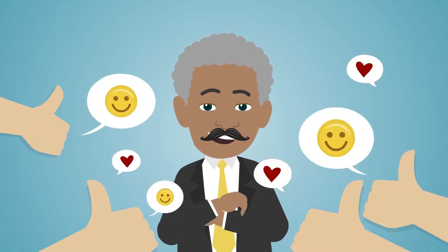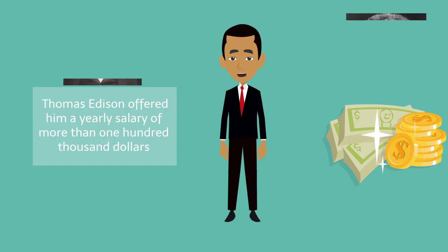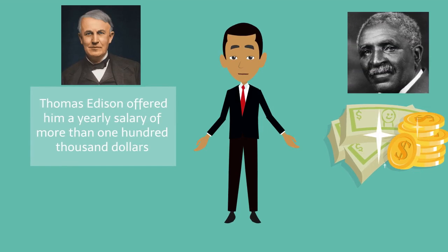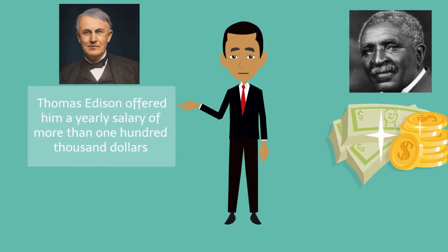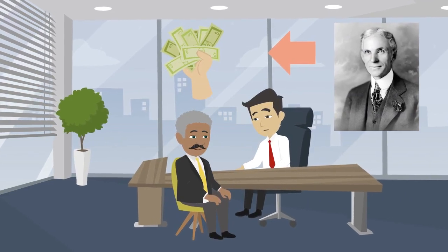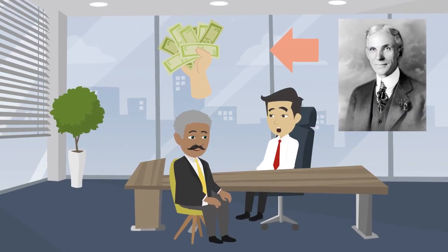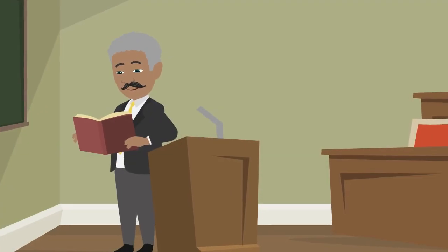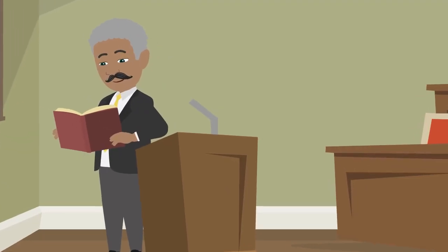George Washington Carver became very famous. Thomas Edison offered him a yearly salary of more than $100,000 to join his staff. Henry Ford, the auto tycoon, also made Carver a generous job offer, but he turned down all the offers and remained at Tuskegee.